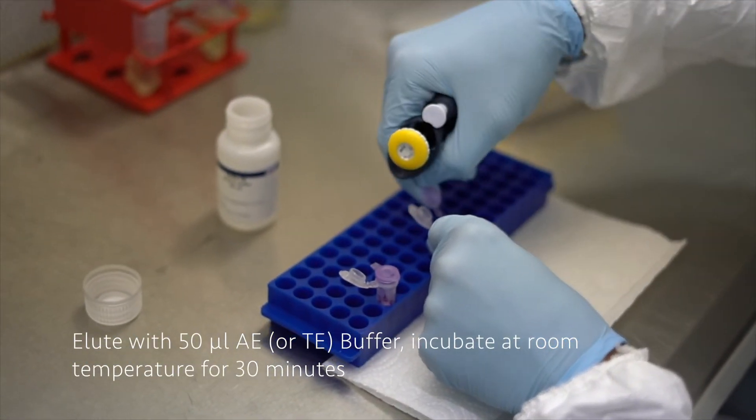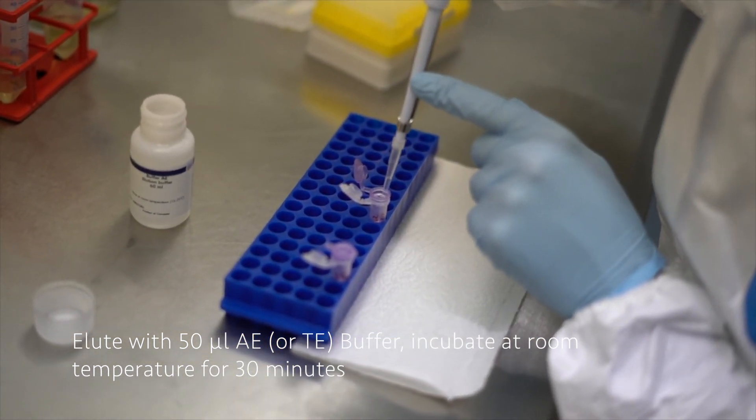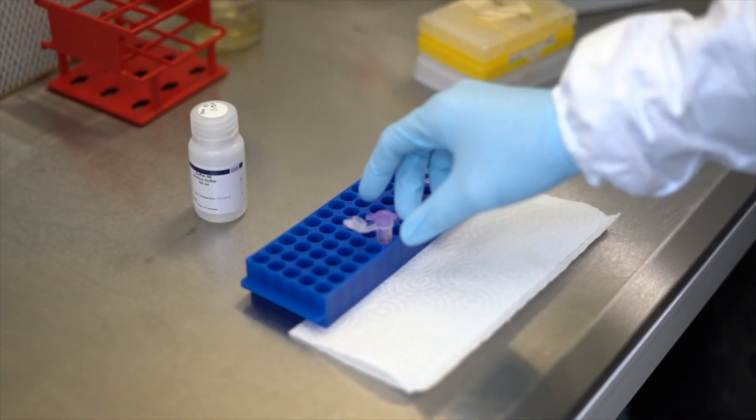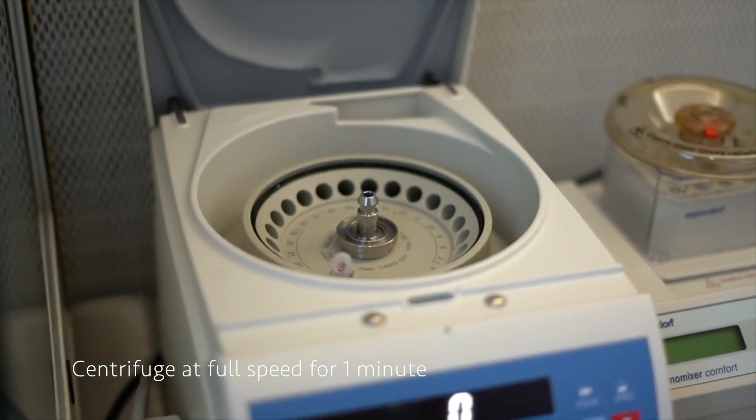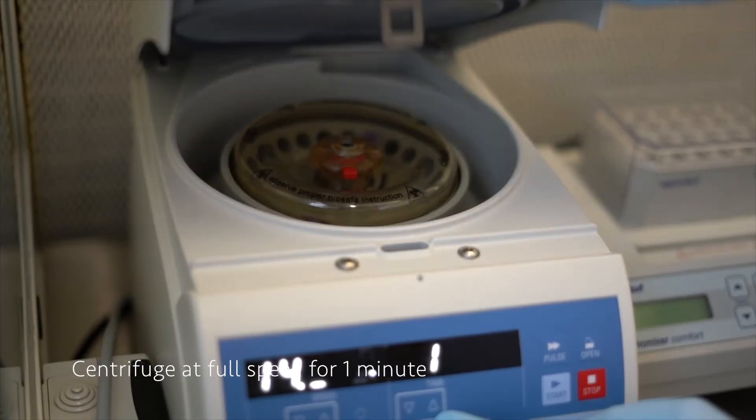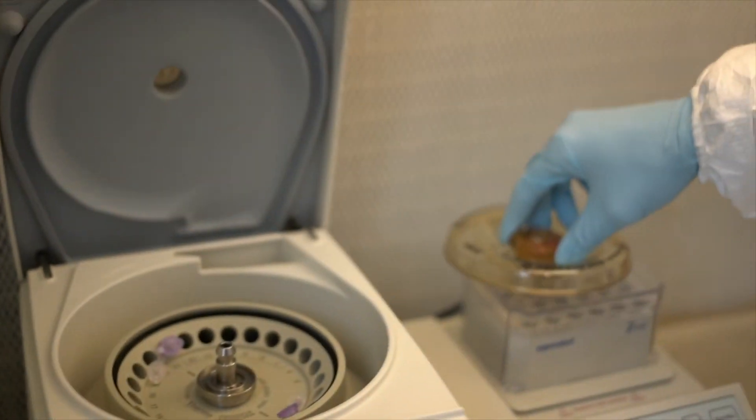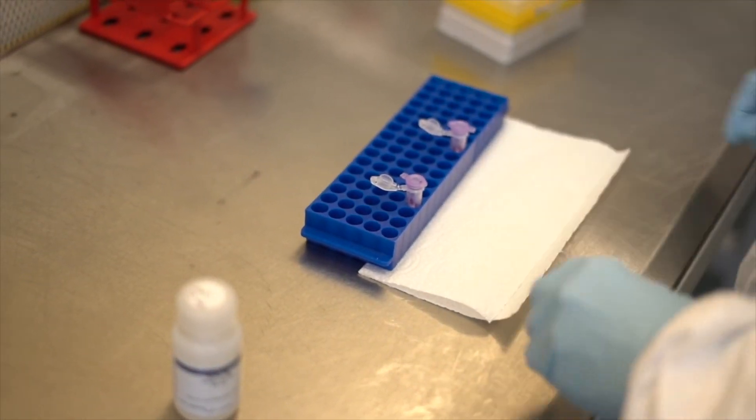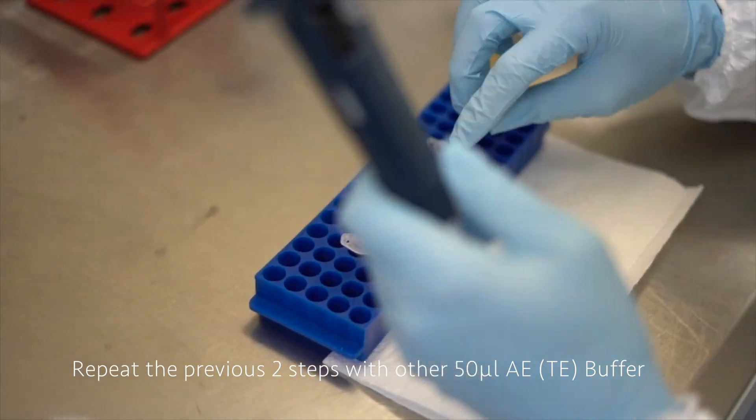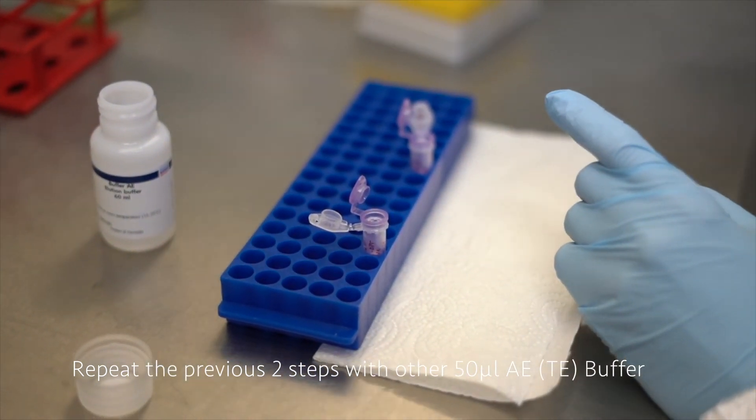Good, 30 minutes are over. Now we have to put the samples back to the centrifuge and centrifuge them for one minute at full speed. We will repeat the elution step again with 50 microliters of AE buffer, again incubating it for half an hour at room temperature.